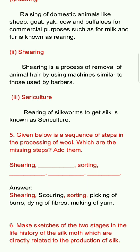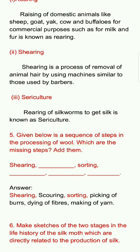Fifth question: Given below is a sequence of steps in the processing of wool. Which are the missing steps? Add them. Shearing, dash, sorting, dash, dash, and dash. Answer: The complete sequence is shearing, scouring, sorting, picking of burrs, dyeing of fibers, making of yarn.